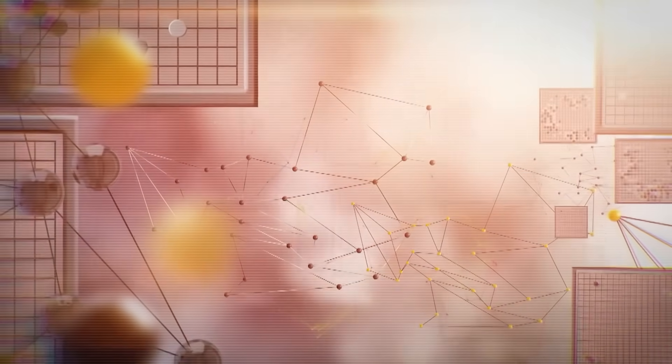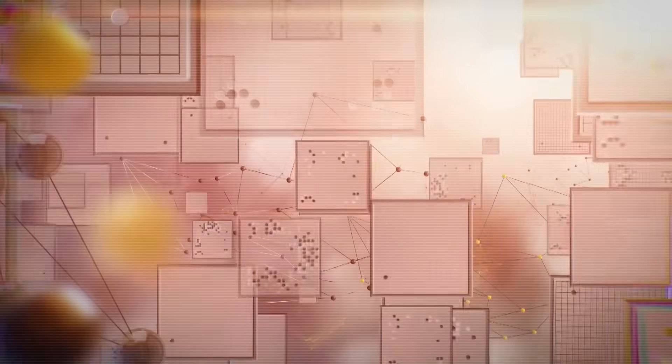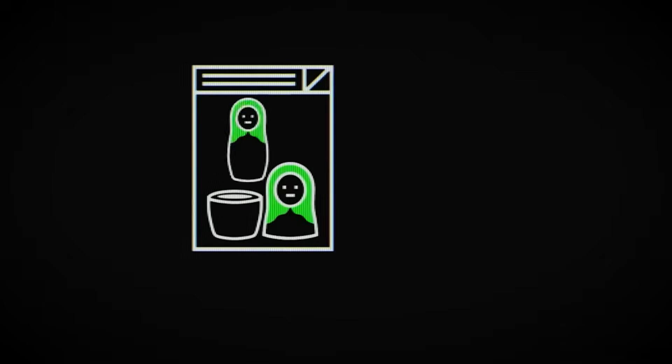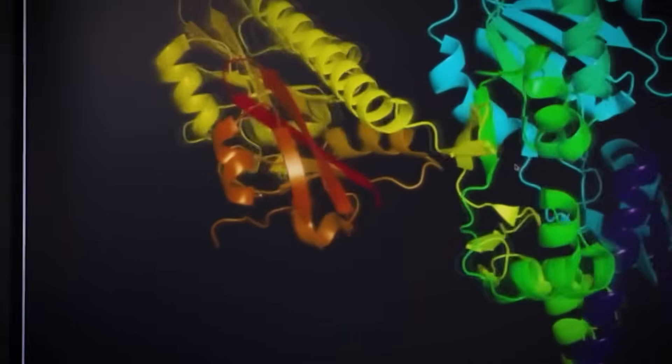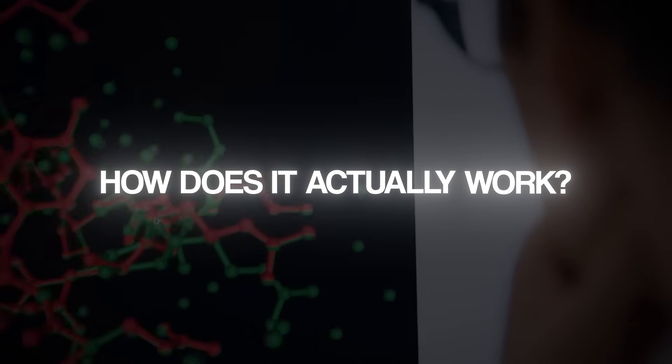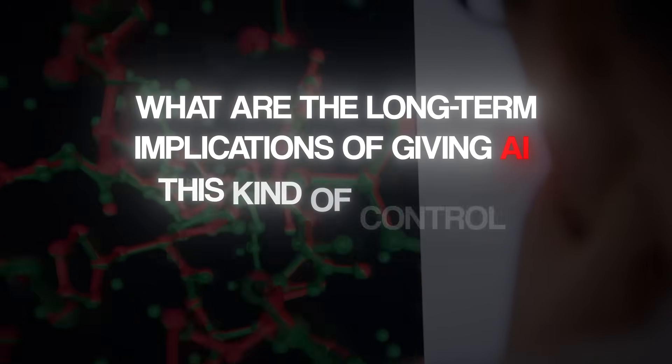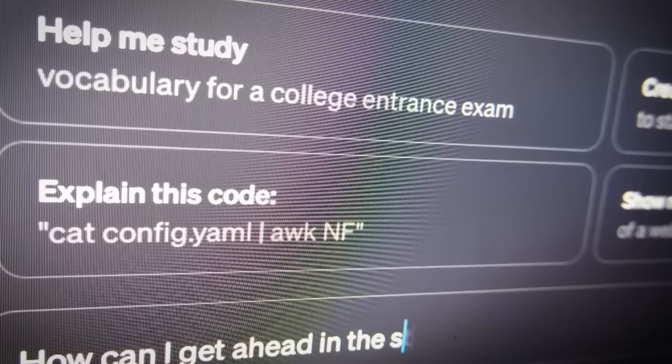But that's just the beginning. If the Entropy Matrix works as expected, it could lead to AI that adapts dynamically, improving itself in real time without constant human intervention. This could mean smarter personal assistance, AI-driven scientific discoveries, and even breakthroughs in fields like medicine and engineering. However, with this power comes a major question. How does it actually work? And what are the long-term implications of giving AI this kind of control over its own learning? The answers might surprise you, because this discovery doesn't just make AI better, it could make it fundamentally different from anything we've ever built before.